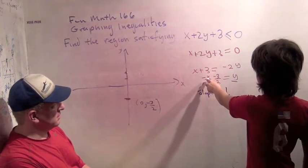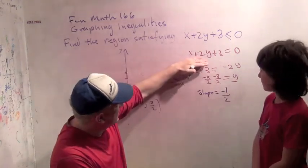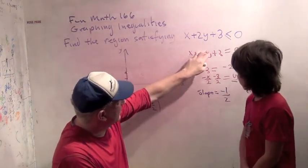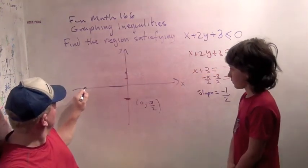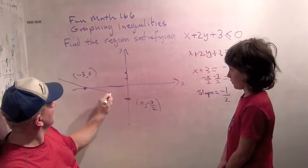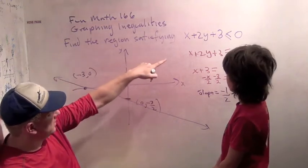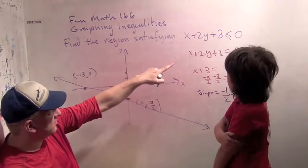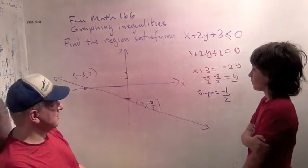X is minus 3. And sometimes that's easy to see even from the beginning. When y equals 0, I have x + 3 equals 0. So that's minus 3. Count it 0. So I have this line connecting these two points. So there's our line. That's the boundary. That's when x + 2y + 3 equals 0.